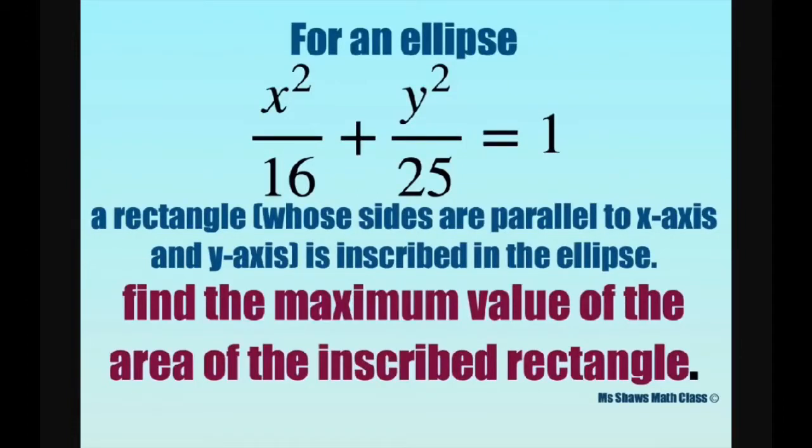Hi everyone! For an ellipse, x squared divided by 16 plus y squared divided by 25 equals 1, a rectangle whose sides are parallel to the x-axis and y-axis is inscribed in the ellipse. We're going to find the maximum value of the area of the inscribed rectangle.